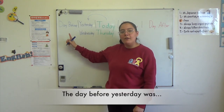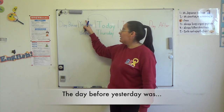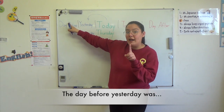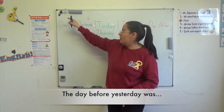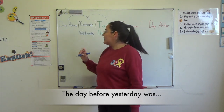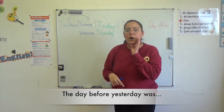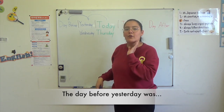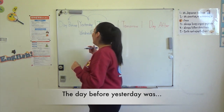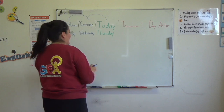But what about the day before yesterday? So if yesterday is the day before, the day before yesterday means one back. So if today is Thursday and yesterday was Wednesday, what day was the day before yesterday? Tuesday. Very good. Tuesday. Nice.